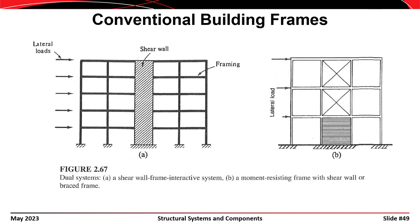A couple more systems: a shear wall system combined with moment-resisting framing is a hybrid system. And on the right, a bracing system in the upper stories with a shear wall system in the lower stories — two different examples of dual or hybrid systems in lateral framing.